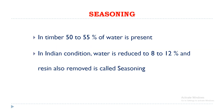This video starts with the topic seasoning. As we know, timber is a hygroscopic material, which means it expands on absorbing water and releases on heat. In timber there will be 50 to 55 percent of water. In Indian conditions, water is reduced to 8 to 12 percent and resin is also removed. This process of removing the resin and reducing the water content is called seasoning.